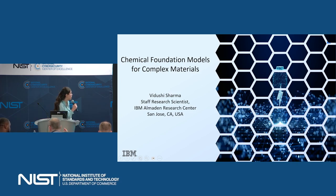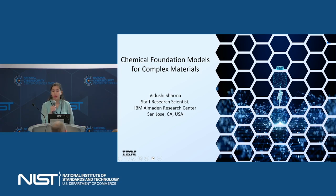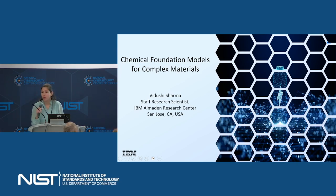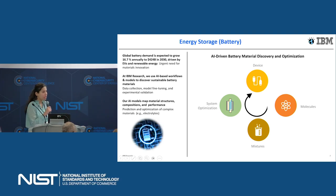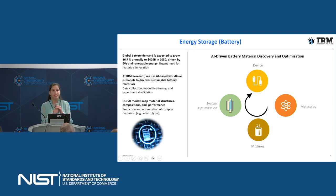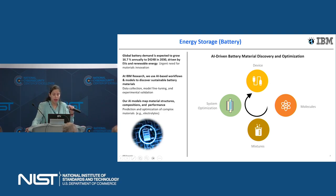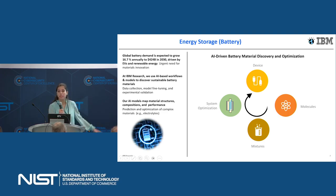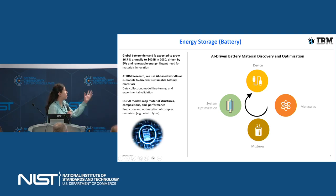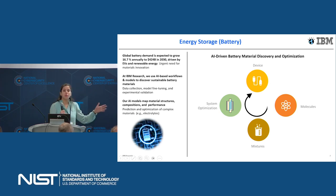Good morning, everyone. I'm Vidushi, and I'm from IBM's Almaden Research Center based in California, Bay Area. I'm going to be talking about how we are using chemical foundation models for complex materials. I'll give you a first overview. IBM's Almaden Research Center is one of the 12 research labs across the globe, and it has a legacy in driving materials innovations, specifically in semiconductors. Lately, IBM as an organization has started focusing on certain sustainable technologies, and energy storage has been recognized as one of them because of its global importance. Our team at IBM develops AI workflows to discover new battery materials, and in this process we collect data, create and fine-tune AI models, and do experimental validation as well.